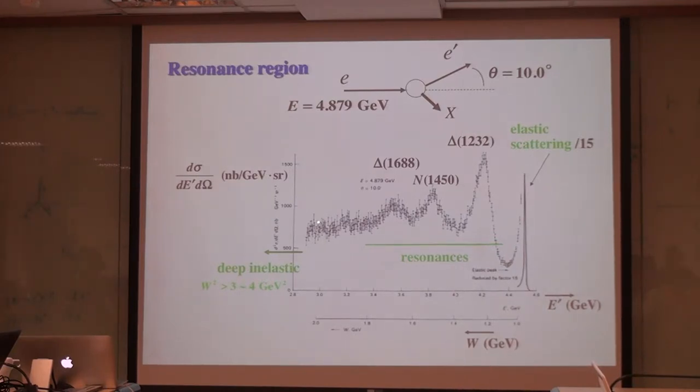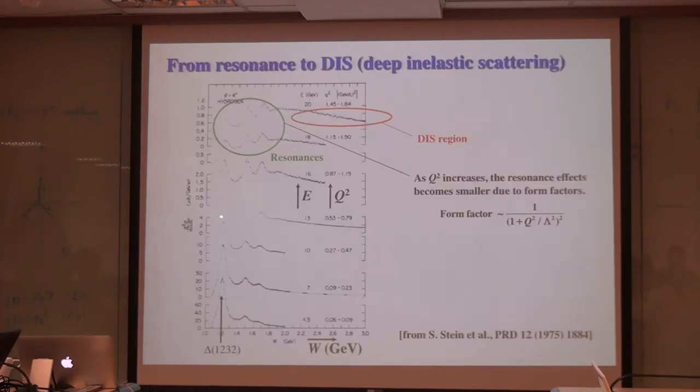In the resonance region, these are the actual data. The ordinate is the cross section with the electron energy of about 5 GeV. The scattering angle is 10 degrees. The abscissa is the scattered electron energy in GeV. On the other hand, the invariant mass is increasing toward the left-hand side. So we have elastic scattering and typical resonances. In this talk, I discuss the deep inelastic process, which is typically taken as W greater than 2 GeV.